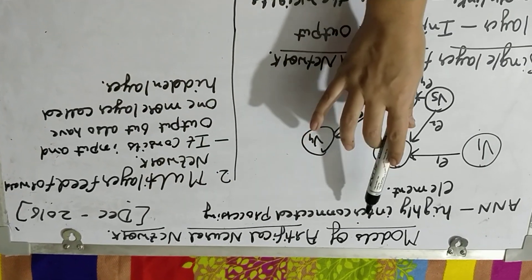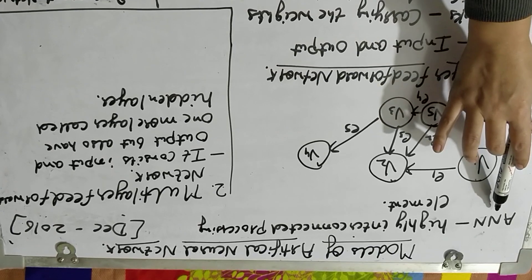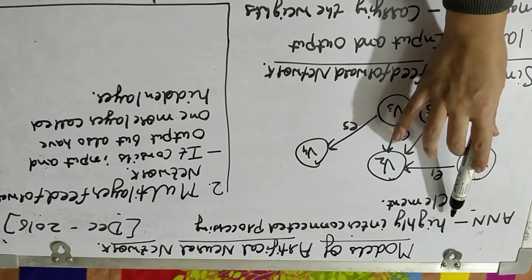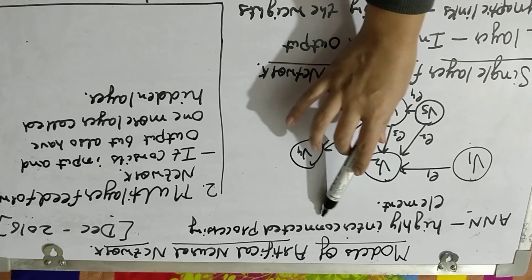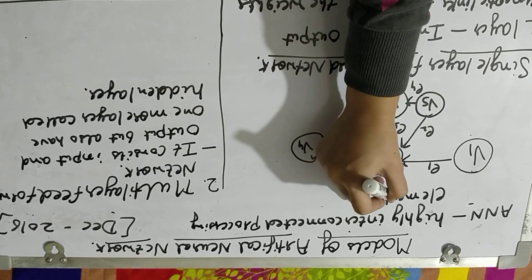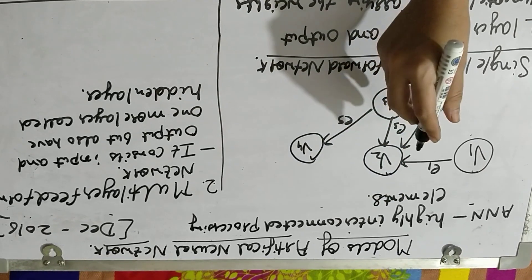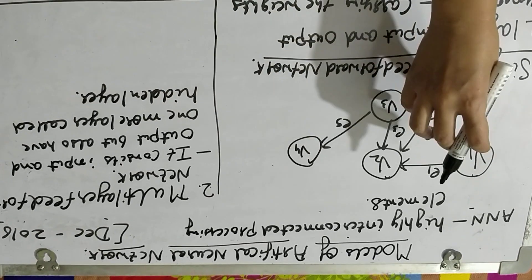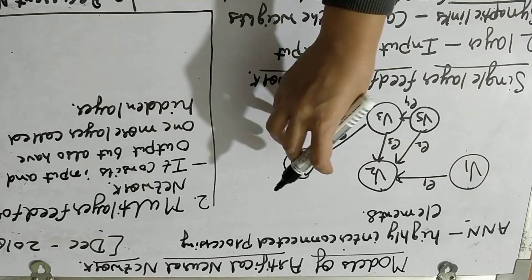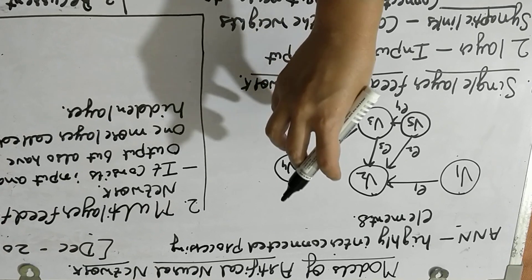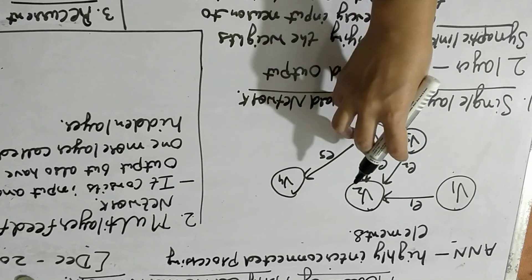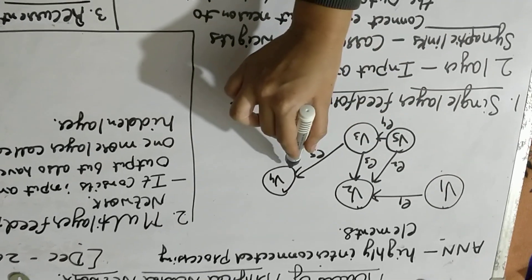As I explained in my previous videos, the artificial neural network structure is mainly composed of highly interconnected processing elements. That means there is not a single neuron which is inside a neural network structure — there are a number of neurons which are actually interconnected with each other.